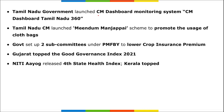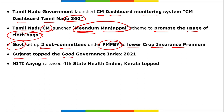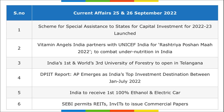Additional state news: Tamil Nadu launched a CM Dashboard Monitoring System and 'Midham Manjapai' scheme to promote cloth bag usage. Two subcommittees were set up under PM-FBY to lower crop insurance premiums. Gujarat topped the Good Governance Index for 2021. NITI Aayog released the fourth State Health Index, with Kerala topping the rankings.